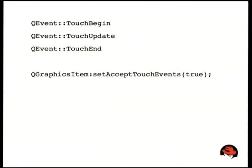In terms of the Qt API, at a high level, you can see where they got the idea for begin, update, and end — they have the same three states for touch. In your graphics item you essentially just call setAcceptTouchEvents and you will get all the events sent to you. It's a fairly simple API with excellent documentation.